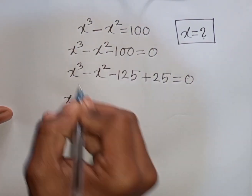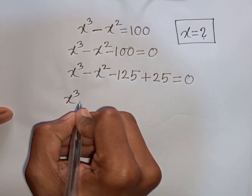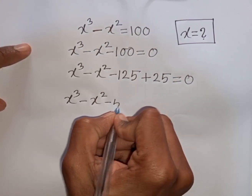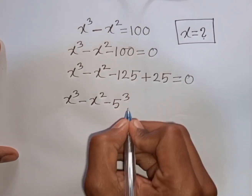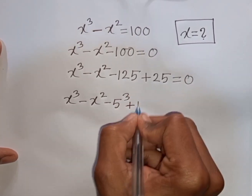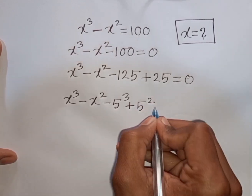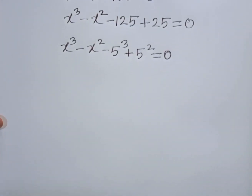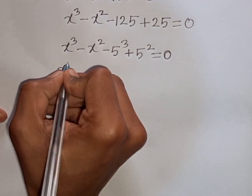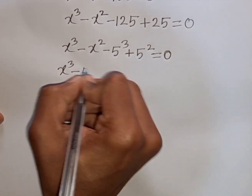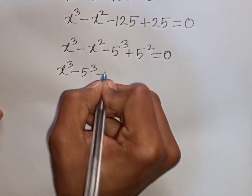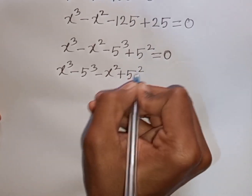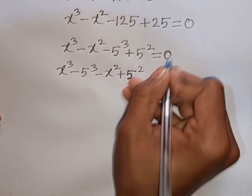Now we have x³ - x² - 125 + 25 = 0. Minus 125 can be written as minus 5³, and plus 25 is the same as plus 5². So we rewrite as x³ - 5³ - x² + 5² = 0.